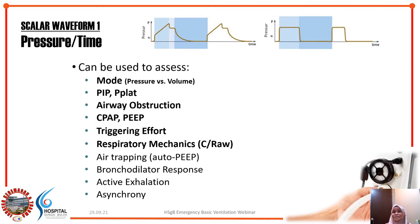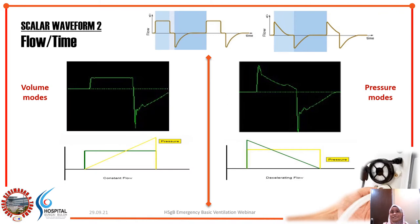In summary for the pressure-time curve: by looking at this graph you can tell what mode the patient is on, read PIP and P-plat values, determine whether the patient is triggering their own breaths, and identify airway obstruction or poor lung compliance.